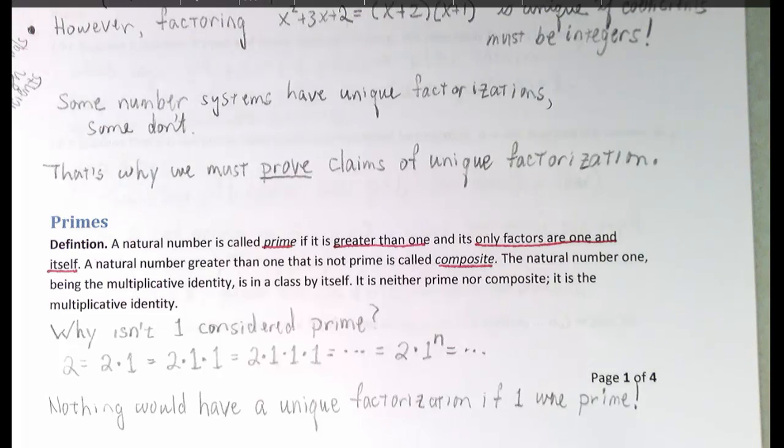Now, if we're going to be talking about unique factorizations into primes, then we need to have a clear idea of what a prime number is. A natural number is called prime if it is greater than 1 and its only factors are 1 and itself. A natural number greater than 1 that is not prime is called composite. The natural number 1, being the multiplicative identity, is in a class by itself. It's neither prime nor composite. It is simply the multiplicative identity.